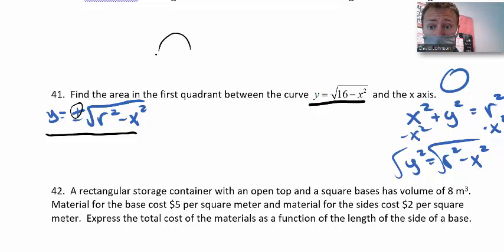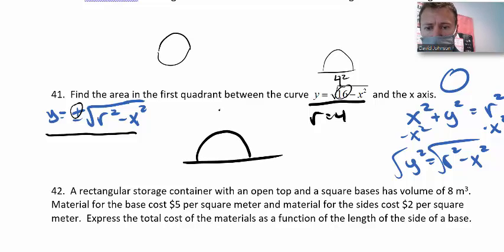If it was a plus or minus, then it would be a full circle going around. So this thing is actually a semicircle. The other thing to take away from this is the 16 is 4 squared. So that means that our radius here is 4.